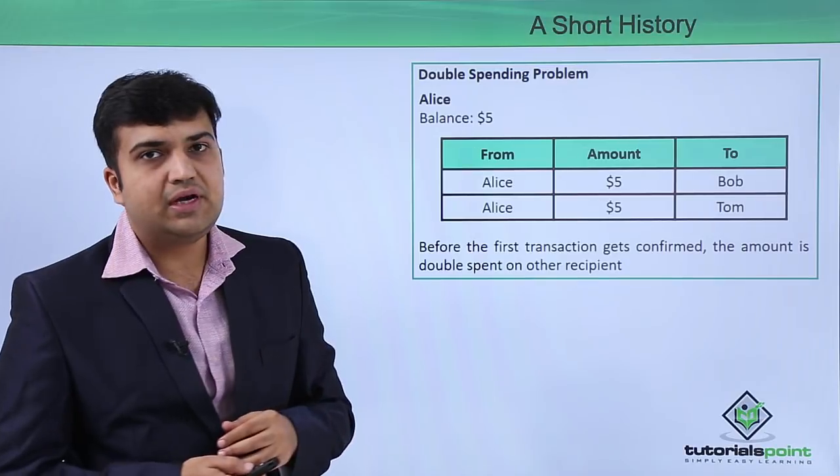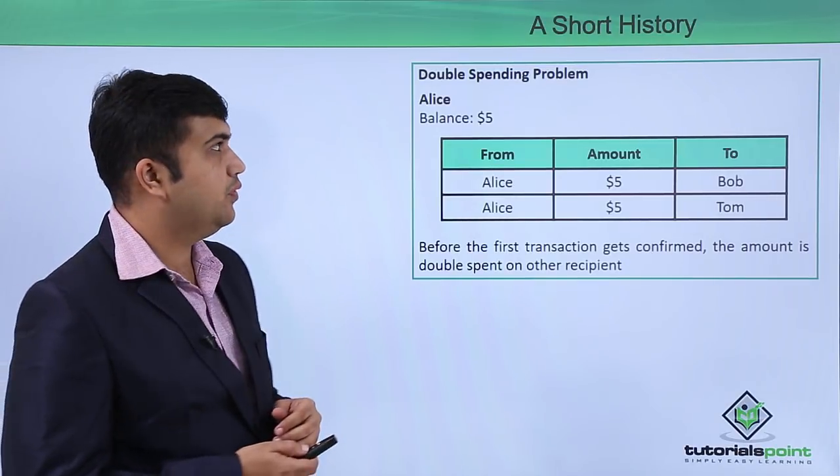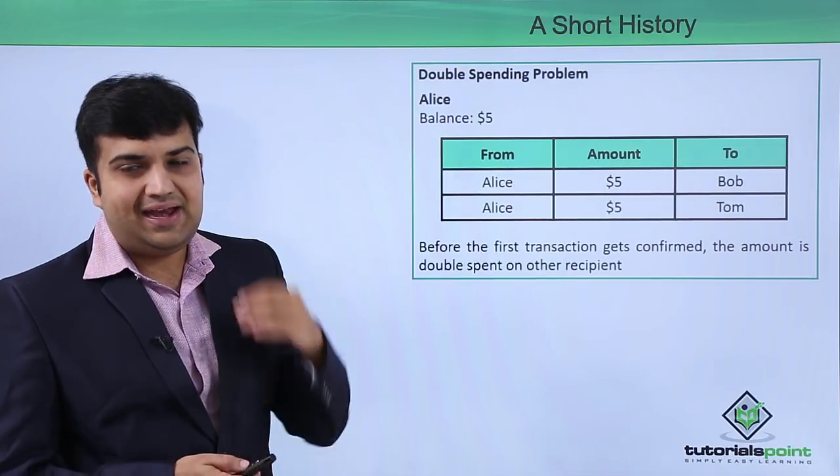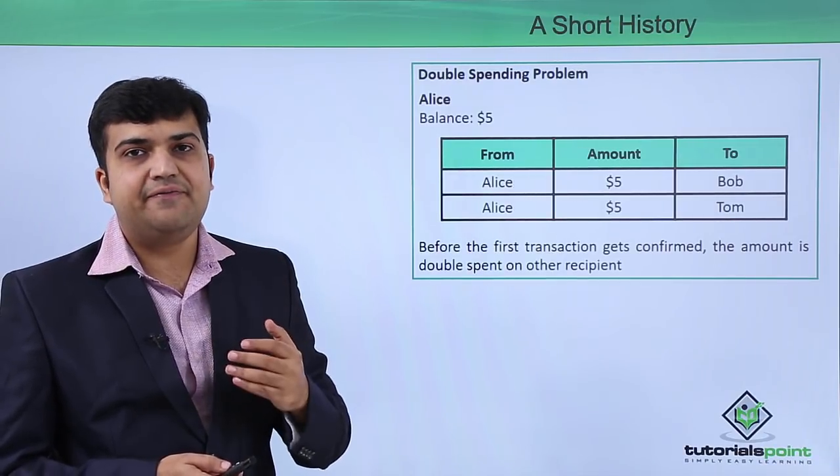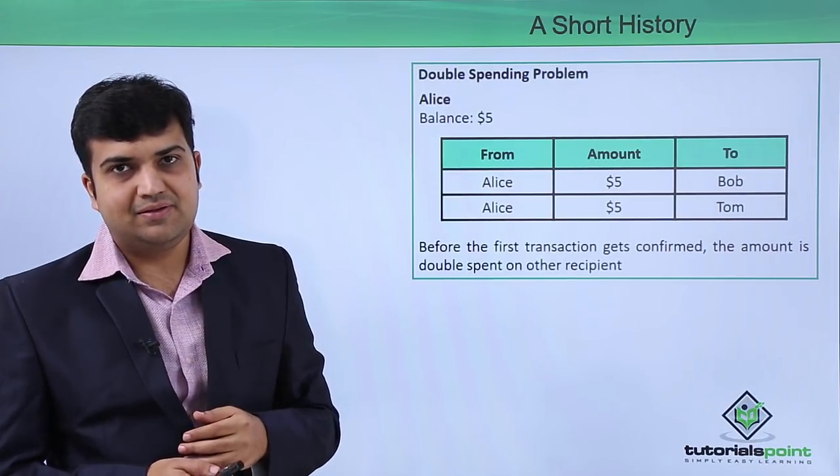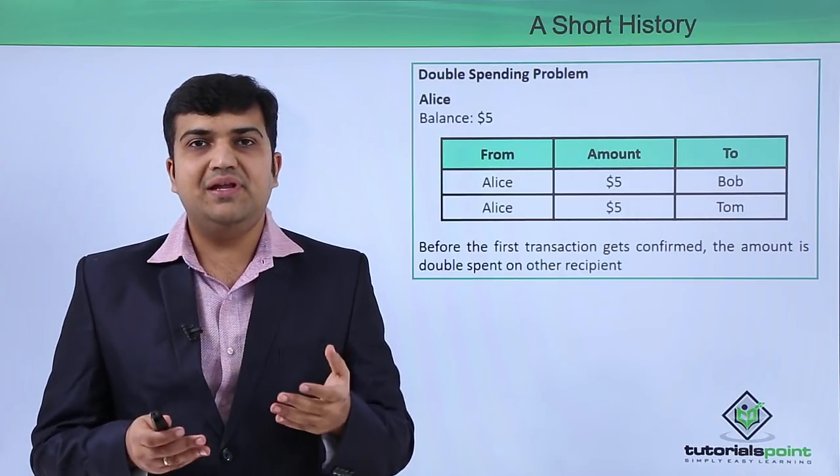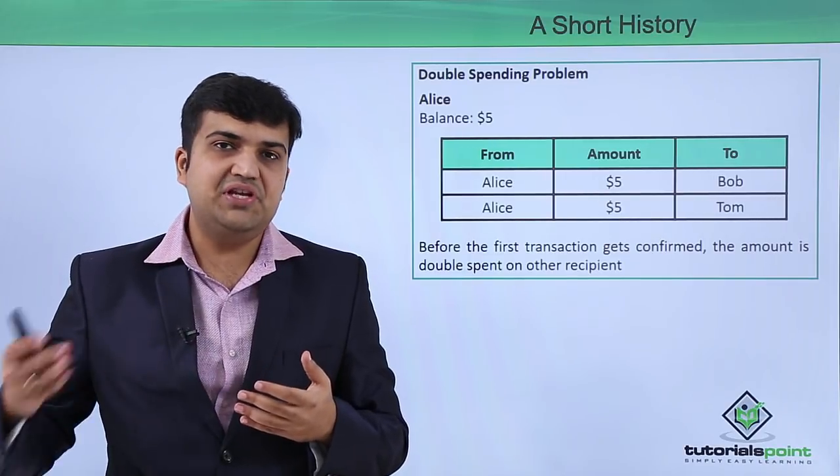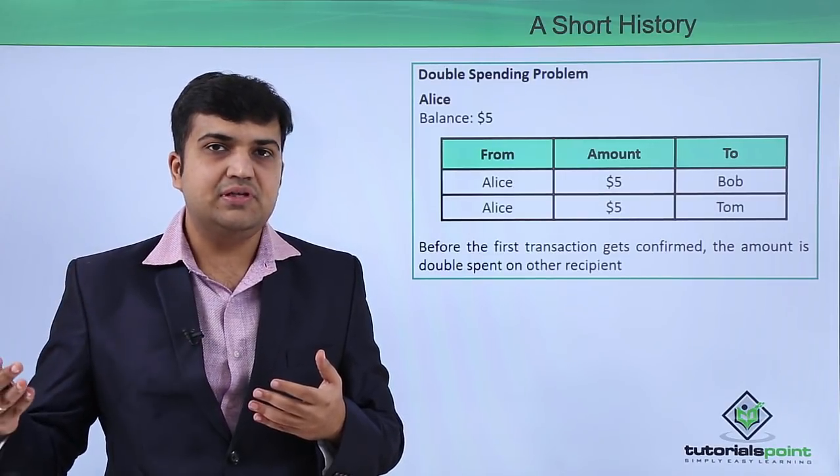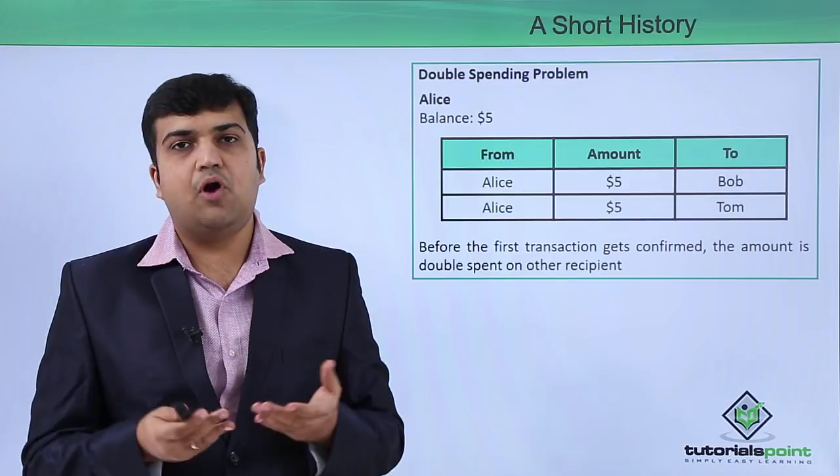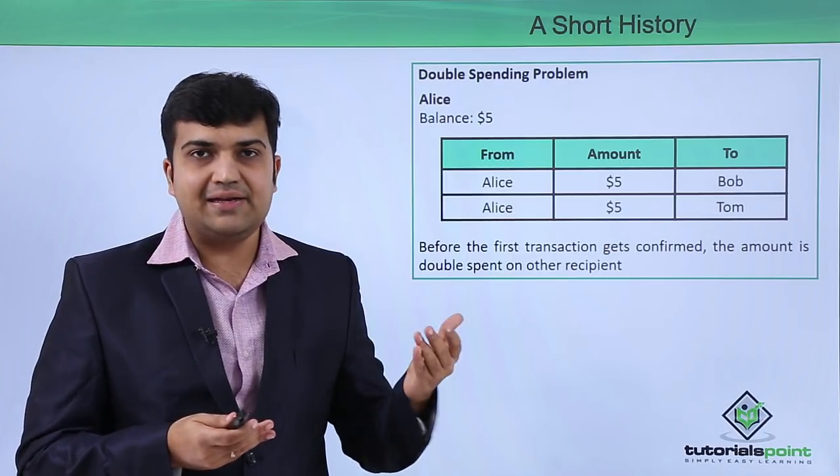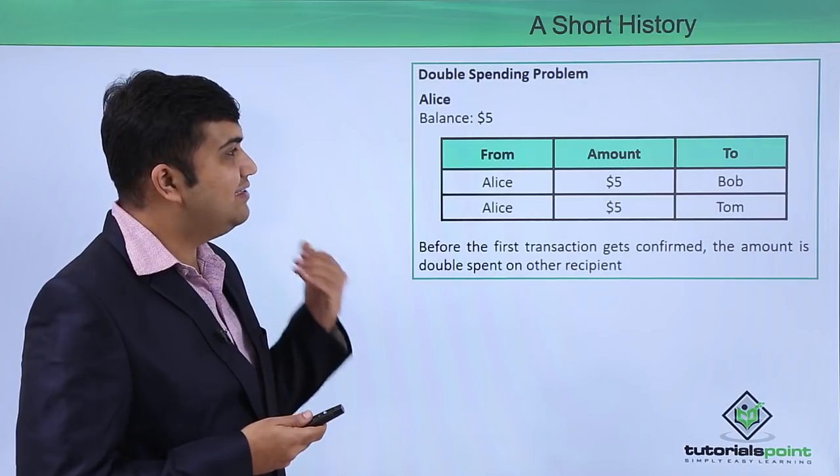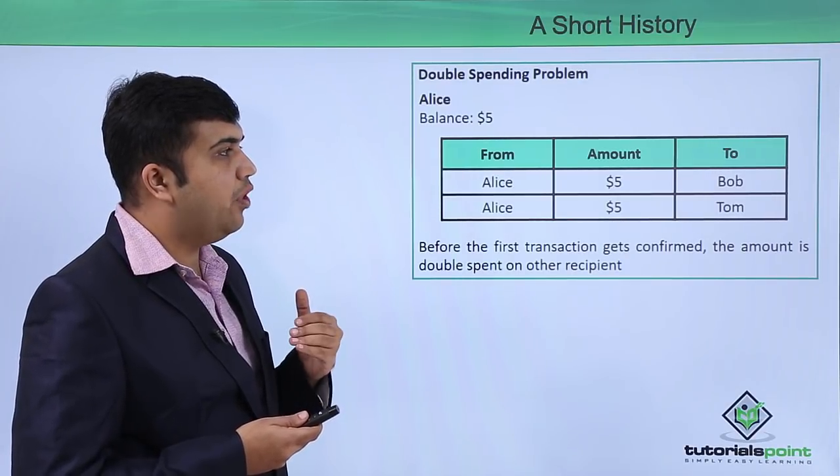First, we will go through the double spending problem. Let's assume we have a person called Alice, and Alice has $5 in her balance. We are talking about a distributed system where there are various machines and nodes which will have a copy of Alice's balance.